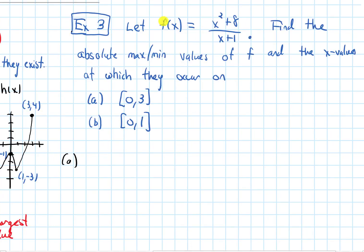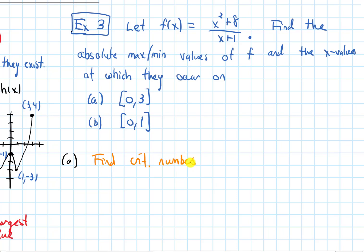Example 3: let f(x) = (x² + 8) / (x + 1). Find the absolute max and min values of f and the x values at which they occur. Part (a) asks for the closed interval [0, 3] and part (b) for the closed interval [0, 1]. Both are closed intervals. The function also needs to be continuous — for this rational function, the only discontinuity is when the denominator is 0, at x = −1, which is not part of either closed interval. So f is continuous, and the Extreme Value Theorem guarantees an absolute max and min.